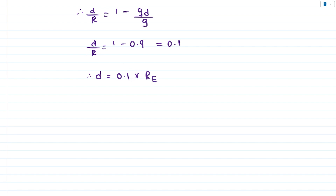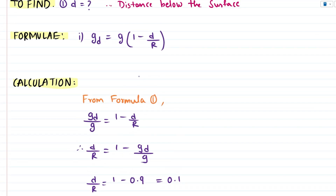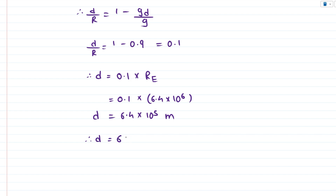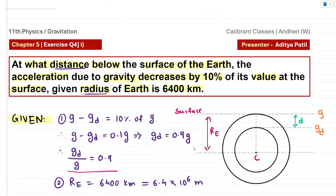So d equals 0.1 times the radius of the earth RE. Substituting RE as 6.4 × 10⁶ metres: 0.1 × 6.4 × 10⁶ becomes 6.4 × 10⁵ metres. Converting to kilometres: 6.4 × 10⁵ metres equals 640 kilometres. Therefore, the distance below the surface at which the acceleration due to gravity decreases by 10% is 640 kilometres. That is the final answer.